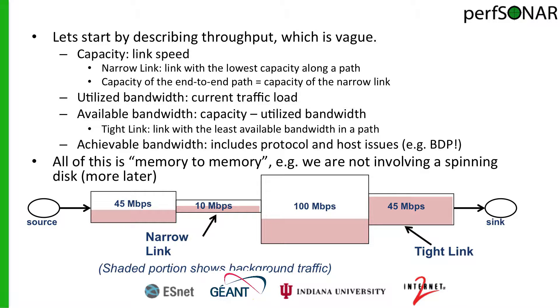Whenever we use a tool like BWCTL, what we're attempting to measure is a certain metric across our network, and we usually call this throughput. But this is a pretty vague term and it's intermixed with a couple of other related items. So let's try to define all these different terms so that we understand what we're truly measuring when we use this tool.